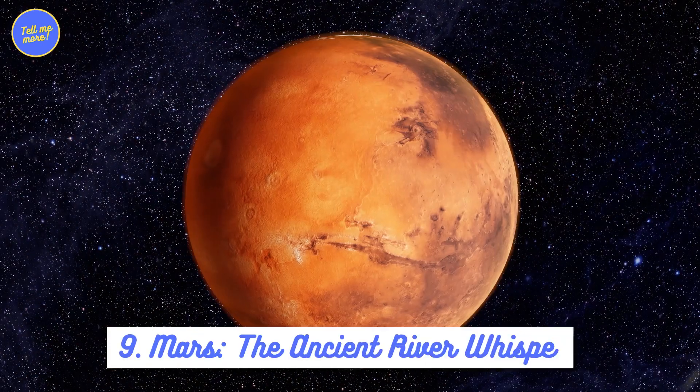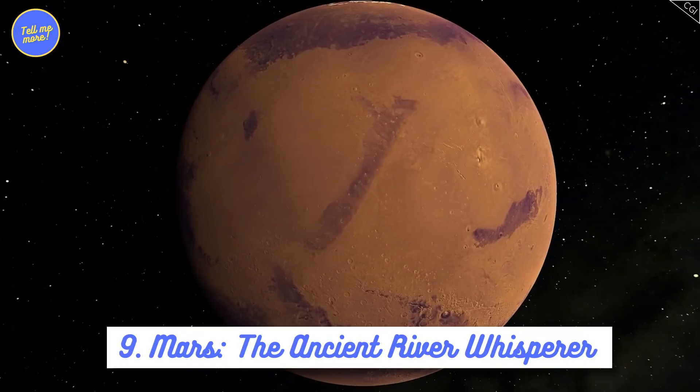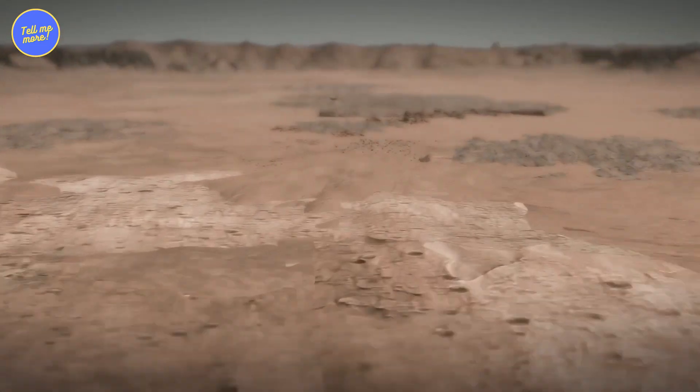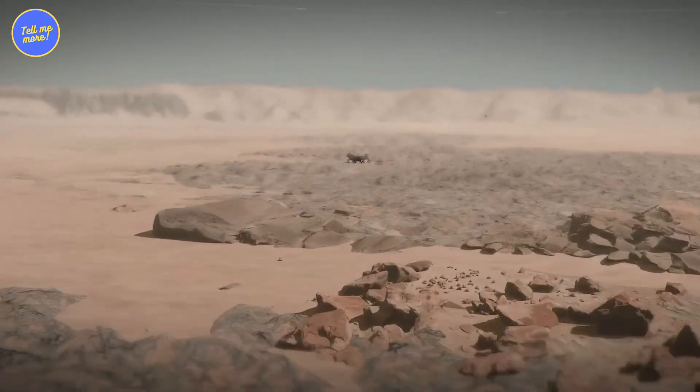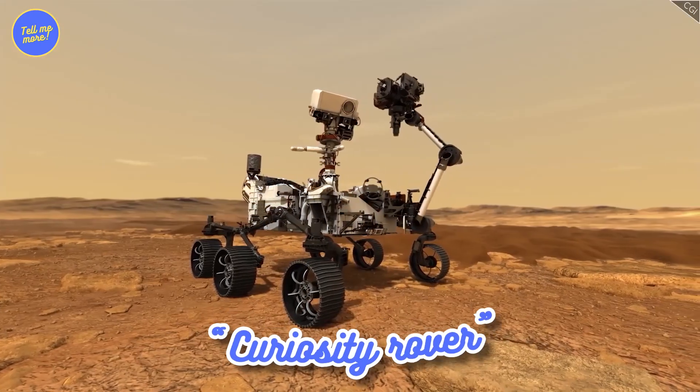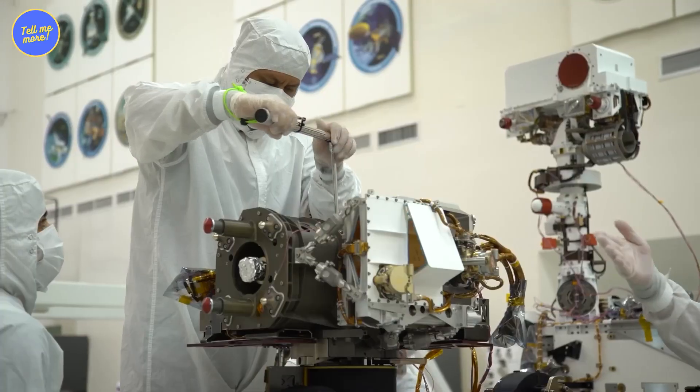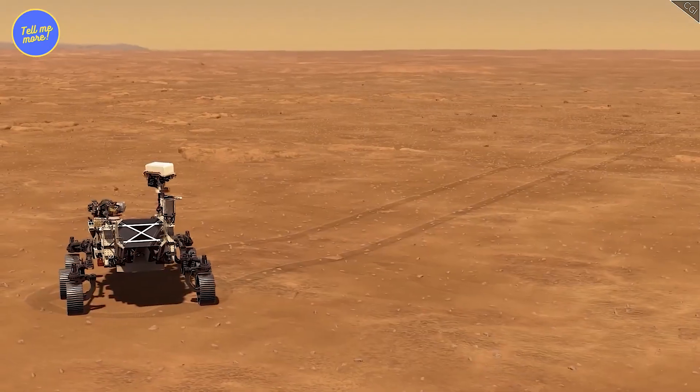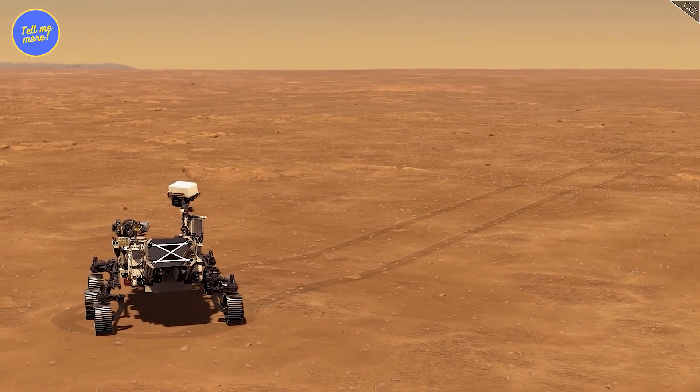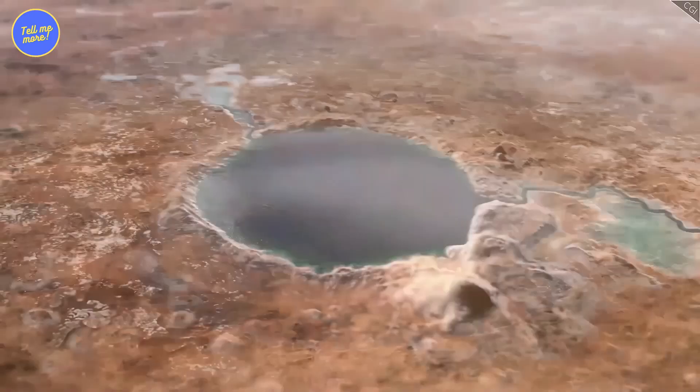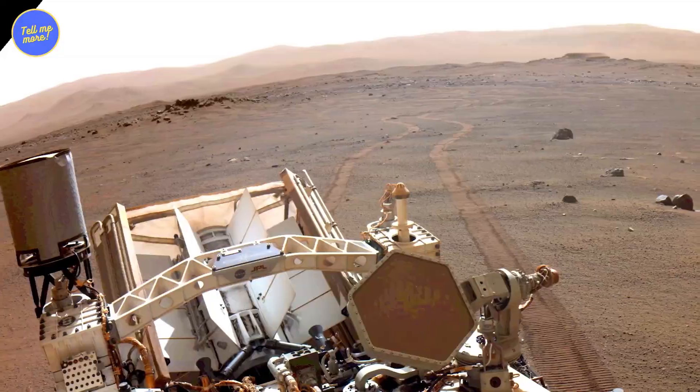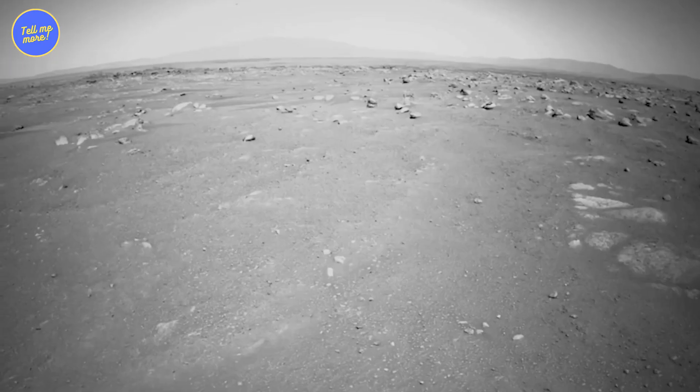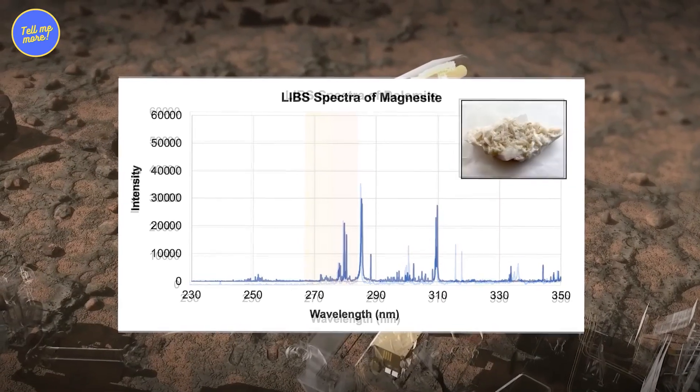9. Mars, the Ancient River Whisperer. Mars has always been the wild card in our solar system poker game. Is it hiding ancient rivers or just dust storms? Enter Curiosity Rover, a high-tech detective sent by NASA in 2012. This rover lands in the Gale Crater and starts sniffing around. Lo and behold, it finds unmistakable signs of an ancient riverbed. Picture rocks smoothed by flowing water, like the kind you find by a stream back on Earth.